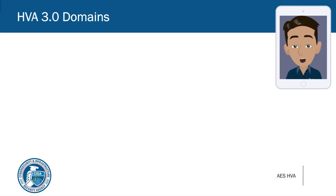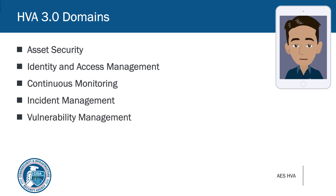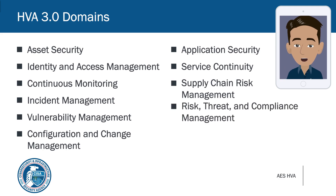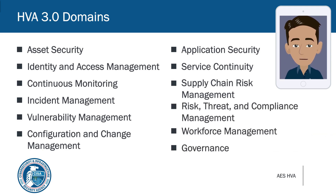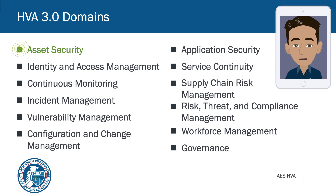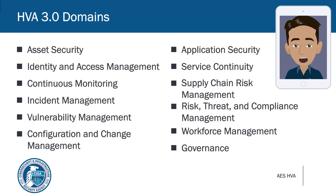HVA 3.0 contains 12 domains: asset security, identity and access management, continuous monitoring, incident management, vulnerability management, configuration and change management, application security, service continuity, supply chain risk management, risk, threat and compliance management, workforce management, and governance. Many of these align closely with discussion topics in HVA 2.0. Others, such as asset security, are broader categories that include items formerly spread across several discussion topics, such as network-based protections and host-based protections. The HVA 2.0 discussion topic of dependencies was divided into multiple domains, including vulnerability management, configuration and change management, and workforce management. The governance domain contains material that is brand new to HVA 3.0.